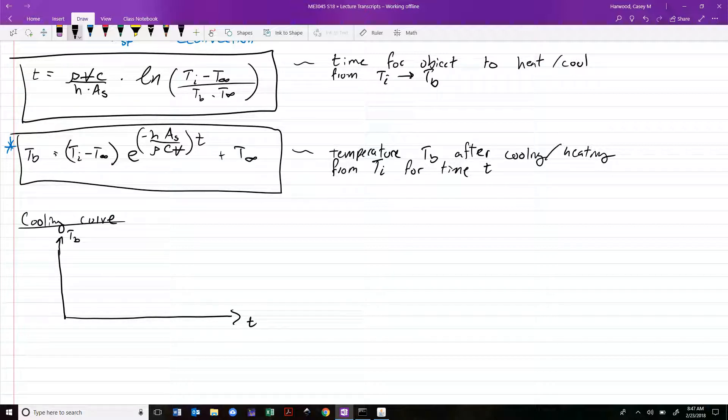This second one - if we plotted T sub B as a function of T, we end up with this thing called the cooling curve. If we have time up here and T B here, say we place this object where the fluid temperature is here and it begins at some much higher temperature. The cooling curve looks like exponential decay, and one feature is that we end up with an asymptotic approach to T infinity, which leads to some problems.